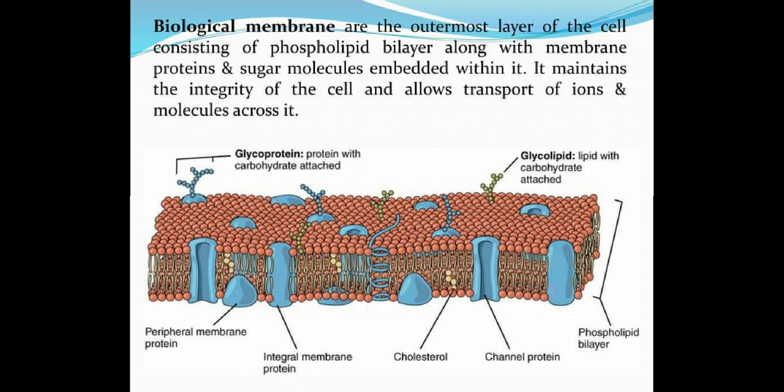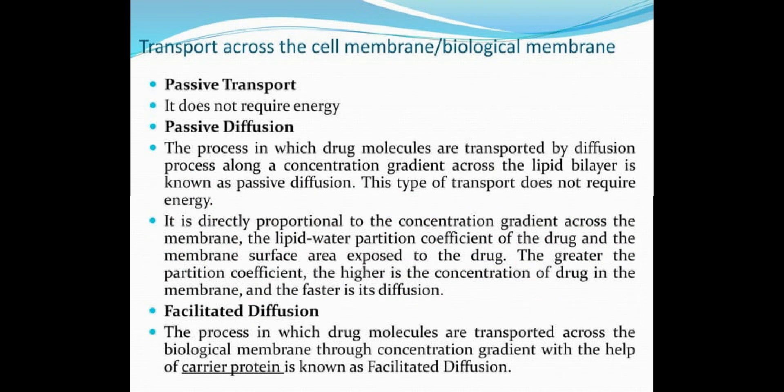A biological membrane is the outermost layer of the cell, consisting of a phospholipid bilayer along with membrane proteins and sugar molecules embedded within it. It maintains the integrity of the cell and allows transport of ions and molecules across it. Drugs reach systemic circulation through membrane transport, which is of the following types: passive transport, active transport, facilitated transport, and endocytosis.